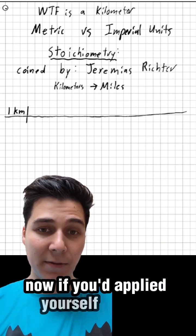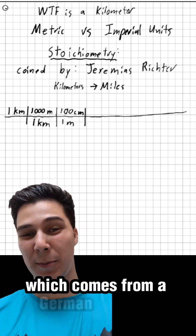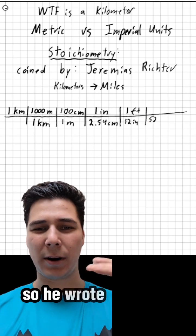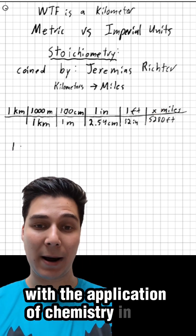Now, if you had applied yourself in high school chemistry, you might remember something called stoichiometry, which comes from a German chemist named Jeremias Richter, and around 1794 or so, he wrote a couple articles on how you could do unit conversion with the application of chemistry in mind.